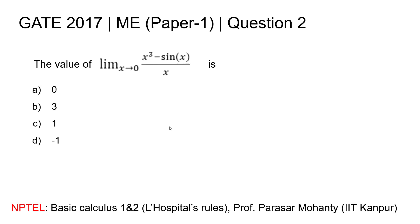Hi all, today we are going to see a question from GATE 2017 Mechanical Paper 1, Question Number 2. You are supposed to find the limit of this particular function when x tends to zero. You are given four options.